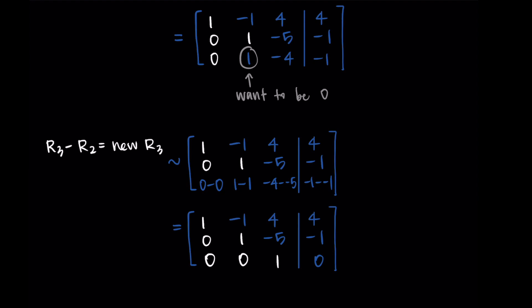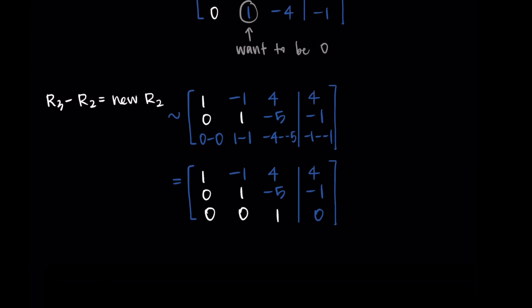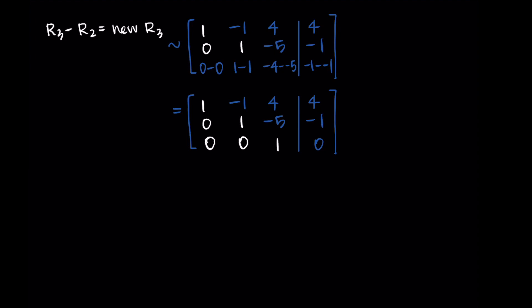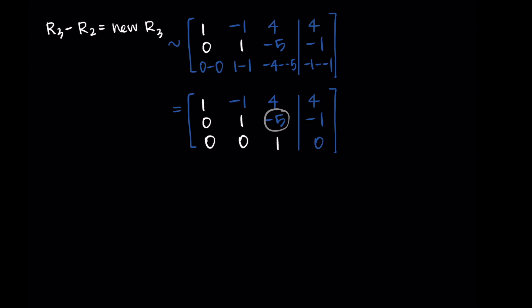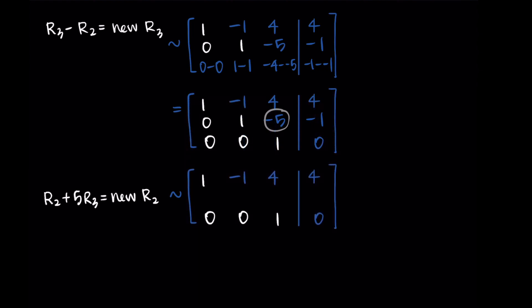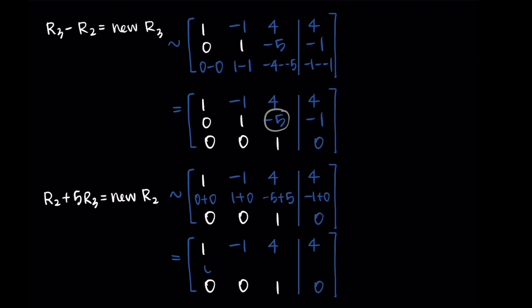We've successfully gotten the ones on the diagonal and zeros below — that's always our goal first, giving us row echelon form. Now we work on the top portion to reach reduced row echelon form. I see negative 5 in the second row that I want to become zero. Taking row two plus five times row three as my new row two: 0 plus 0, 1 plus 0, negative 5 plus 5, negative 1 plus 0. That leaves me with 0, 1, 0, negative 1.